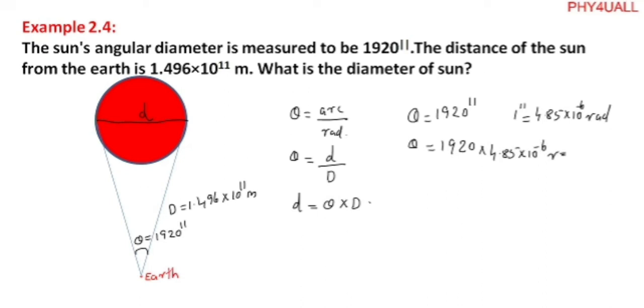So the diameter of the sun can be calculated as 1920 × 4.85×10⁻⁶ times capital D. What is capital D? That is 1 AU, whose value is 1.496×10¹¹ meters.